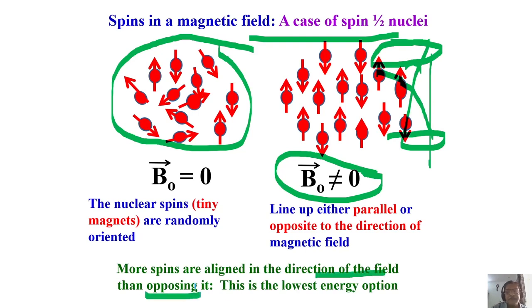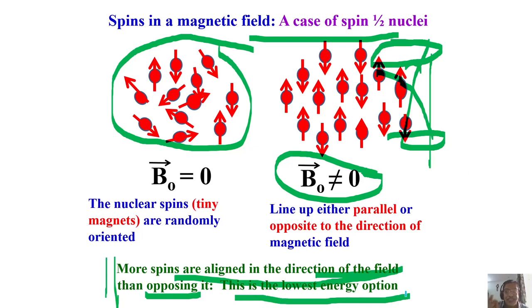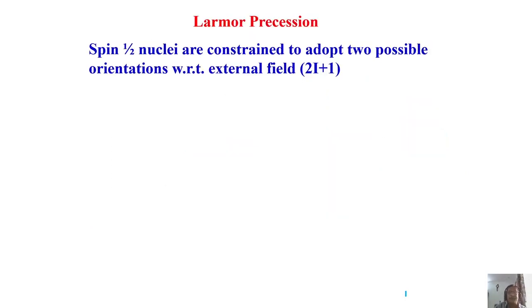More spins align in the direction of the field because this is the lowest energy option. The negative sign in E = -μ·B ensures that the orientation parallel to the field is lower energy. Nuclear spins are constrained to two possible orientations given by 2I+1. For spin-½ the quantization angle is 54.7° — one orientation at +54.7° and one at -54.7° relative to the field direction.